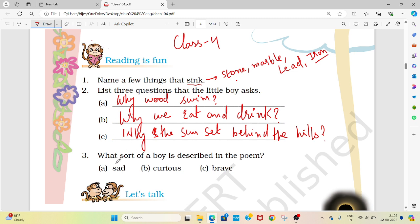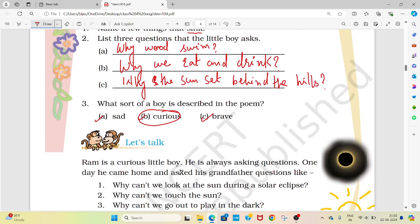The next is what sort of boy is described in the poem. Is he sad, curious, or brave? So in this chapter the boy is described as curious. He is a curious boy.